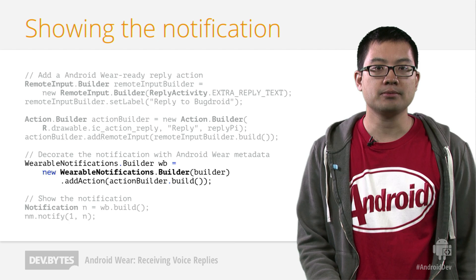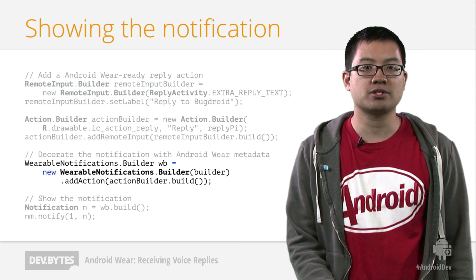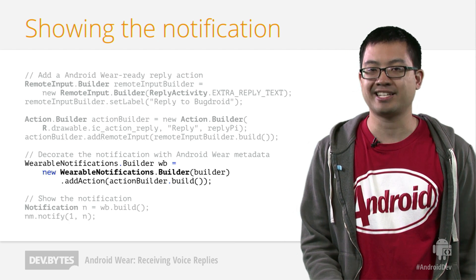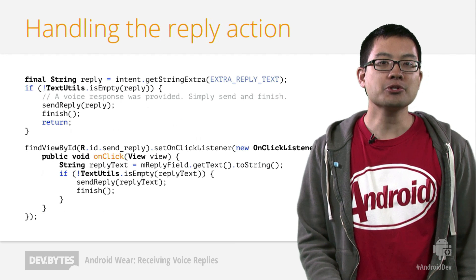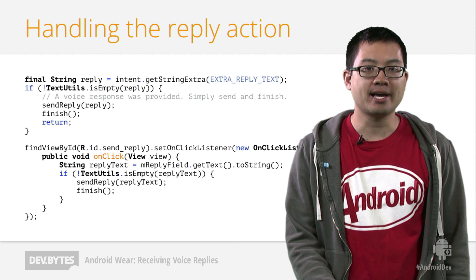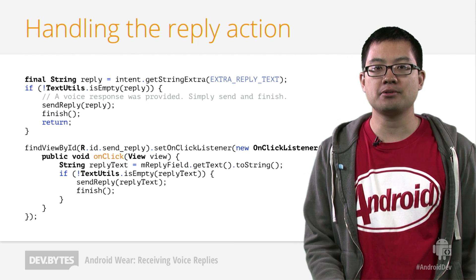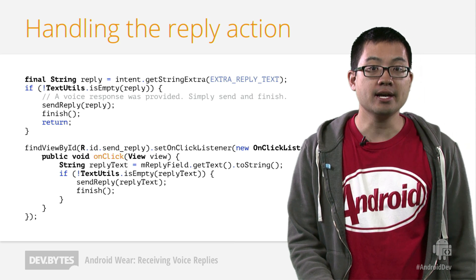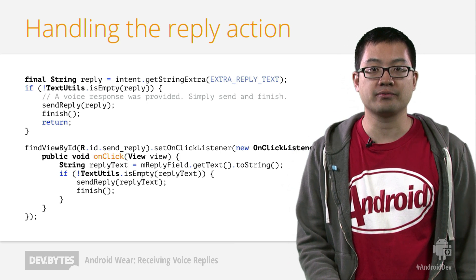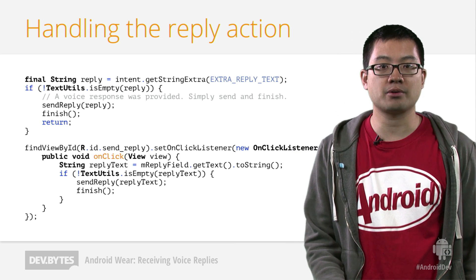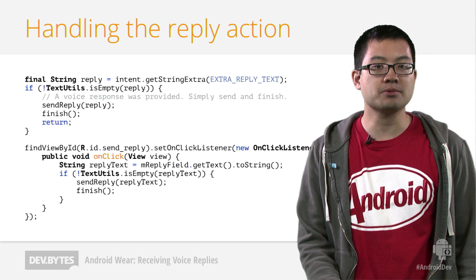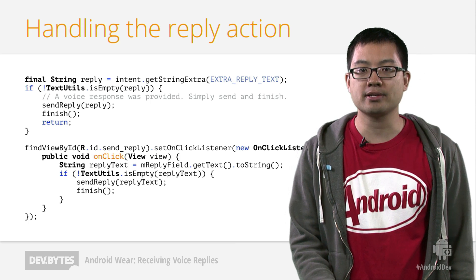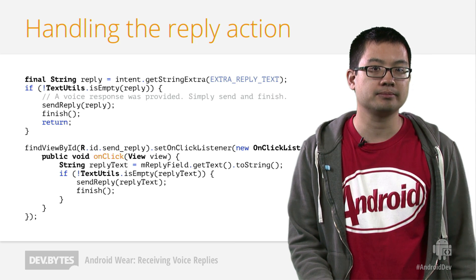Then we simply need to wrap our NotificationCompat builder in a wearable notification builder. That's it. To handle voice replies in your reply activity, simply check if the extra you specified earlier has any content. If it does, you know that the user responded with their voice from their Android Wear device, and you can simply send the response and finish the activity immediately. Otherwise, show the activity as you normally would.